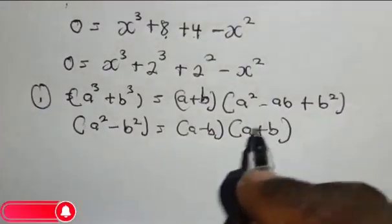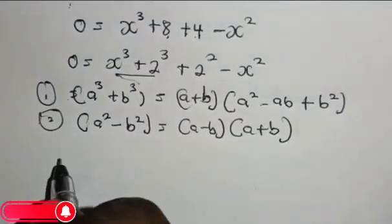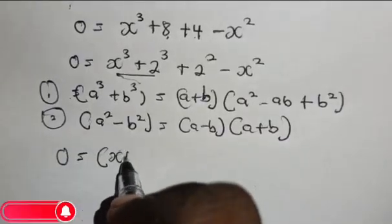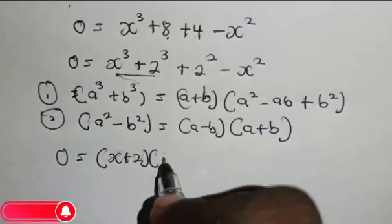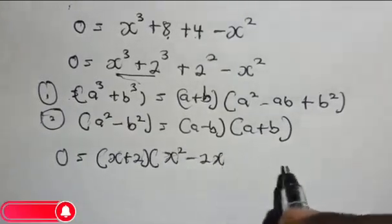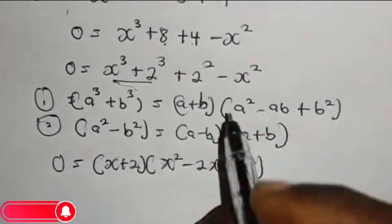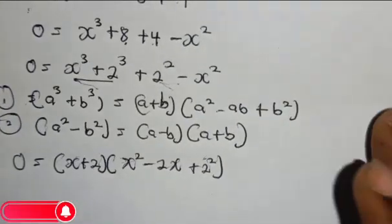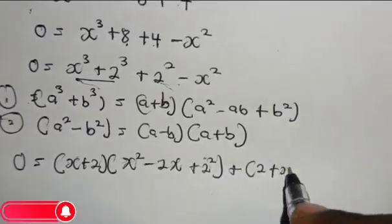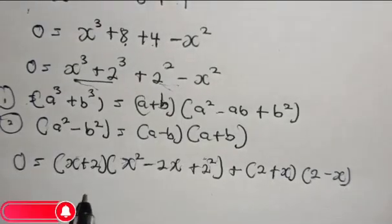Now let's apply these two properties. Starting with the first property: 0 equals s plus 2 multiplied by s squared minus 2s plus 2 squared. The other one, which is difference of two squares, is going to be plus 2 plus x in brackets multiplied by 2 minus x.